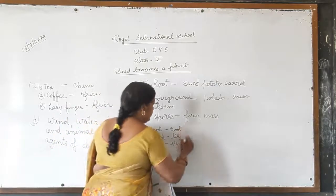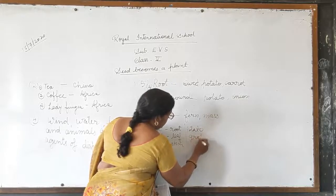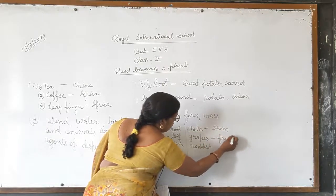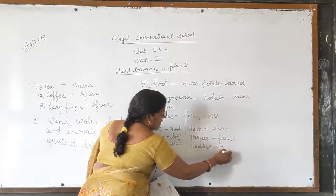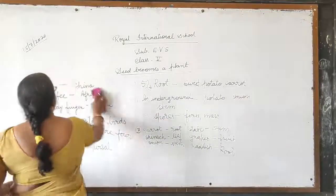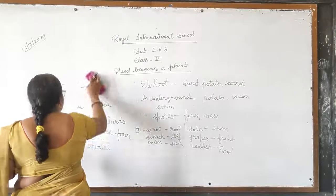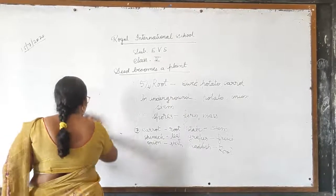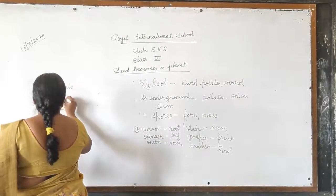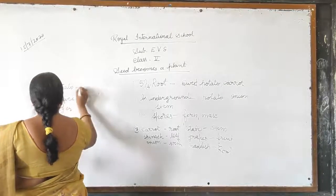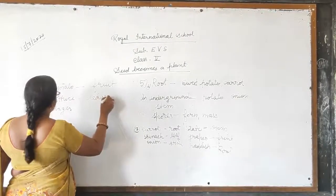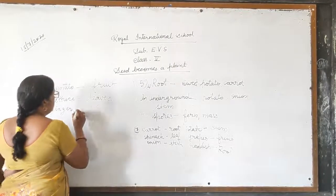Potato, grapes, and radish: potato is stem, grapes is fruit, and radish is root. After that, tomato, lettuce, and ginger: tomato is fruit, lettuce is leaf, and ginger is stem.